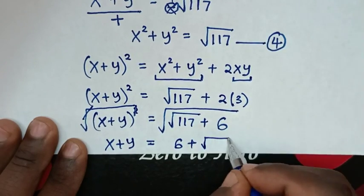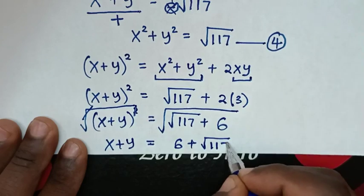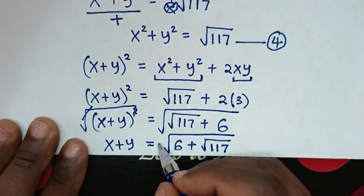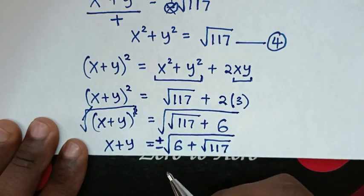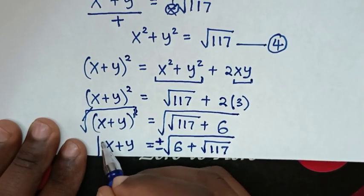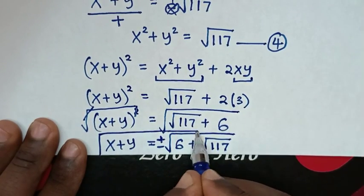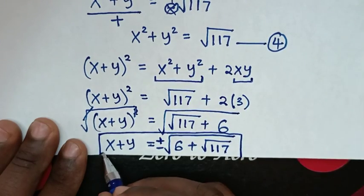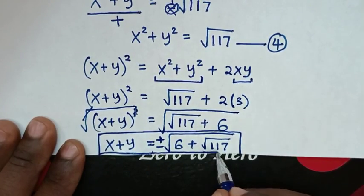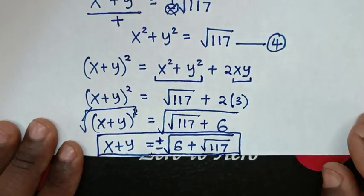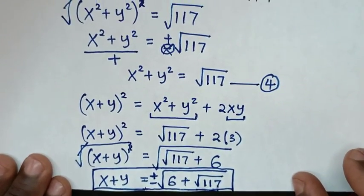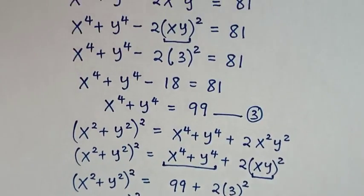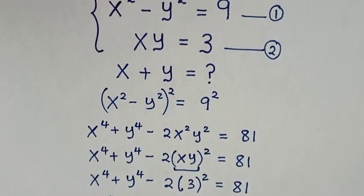Plus square root of 117. We apply square root, which gives plus or minus square root of (square root of 117 plus 6). Therefore this is the final answer for the value of x plus y in this problem. Thank you for watching. See you in the next video. Bye bye.